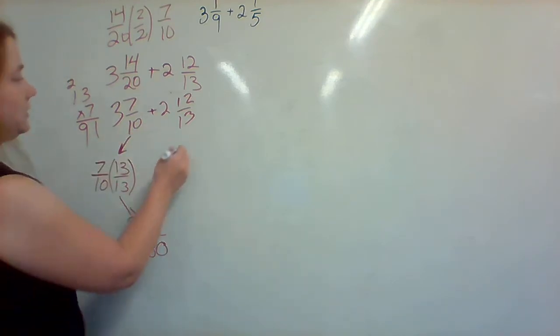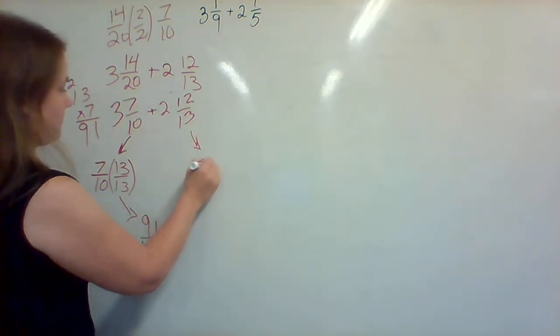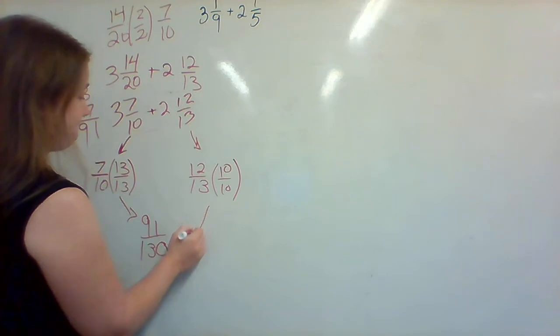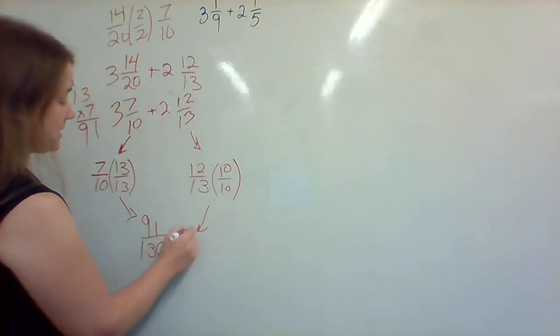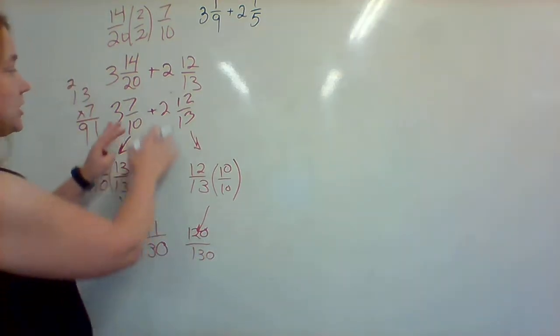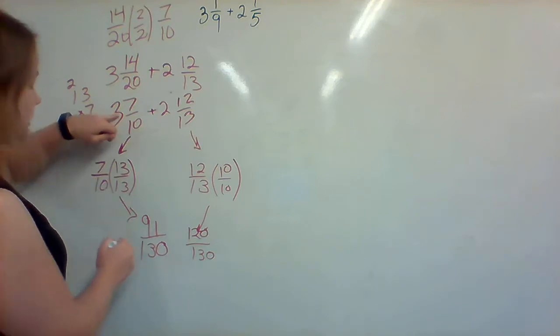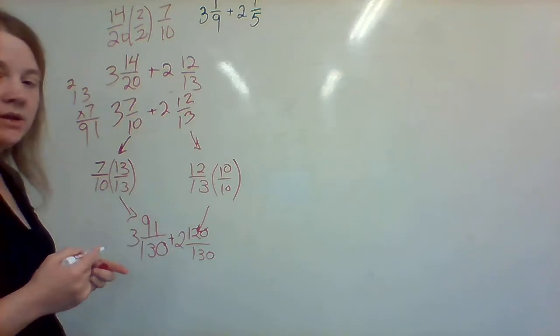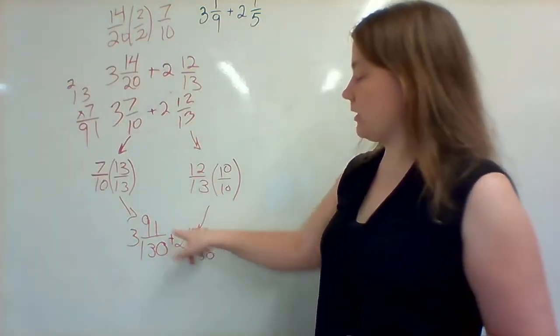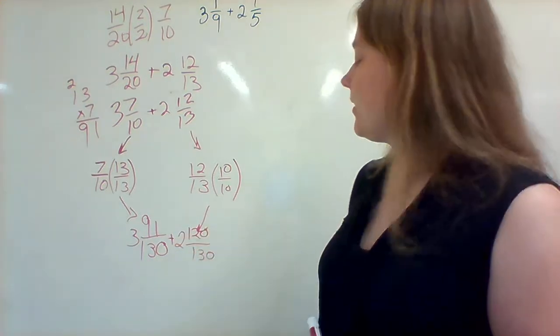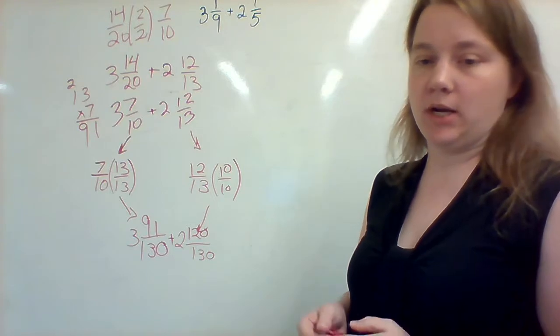Then I'm going to take out the 12 over 13 and multiply it using the other denominator, which is 10. So that's by 10 over 10. 12 times 10 is 120, 13 times 10 is 130. Now that I've done this, I'm going to bring down everything that I didn't touch. I didn't touch the 3, so that comes down, the plus sign, and the 2. So now I have 3 and 91 over 130 plus 2 and 120 over 130.